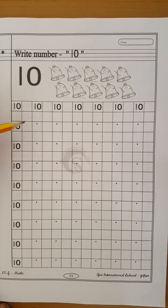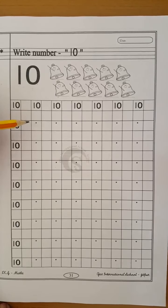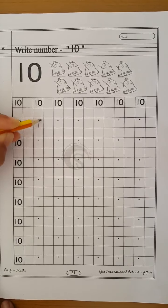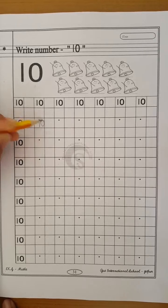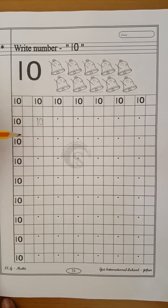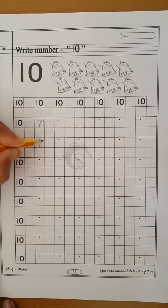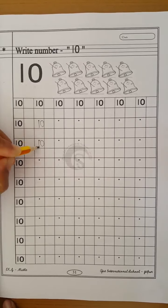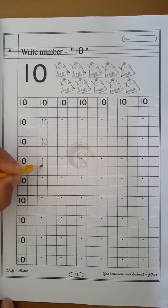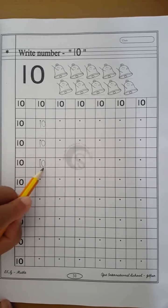So children, now let's write number 10. How do you write number 10? Children, we already learned how to write number 1. So first write number 1, then draw 0. Children, number 1 and 0 should not be touched. Okay children? Write number 1, then leave some space and draw 0. 1, 0, 10. Number 1 and then 0 make number 10. 1, 0, 10.